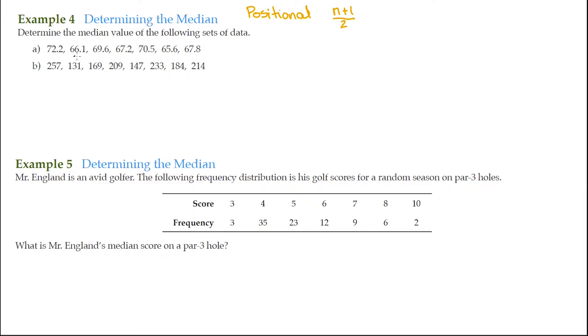So we'll do that first. For letter A, we're going to take this data here, and we're going to list it in ascending order. So we already have 65.6. That's the smallest data value, and then we just increase from there. 66.1, then 67.2.